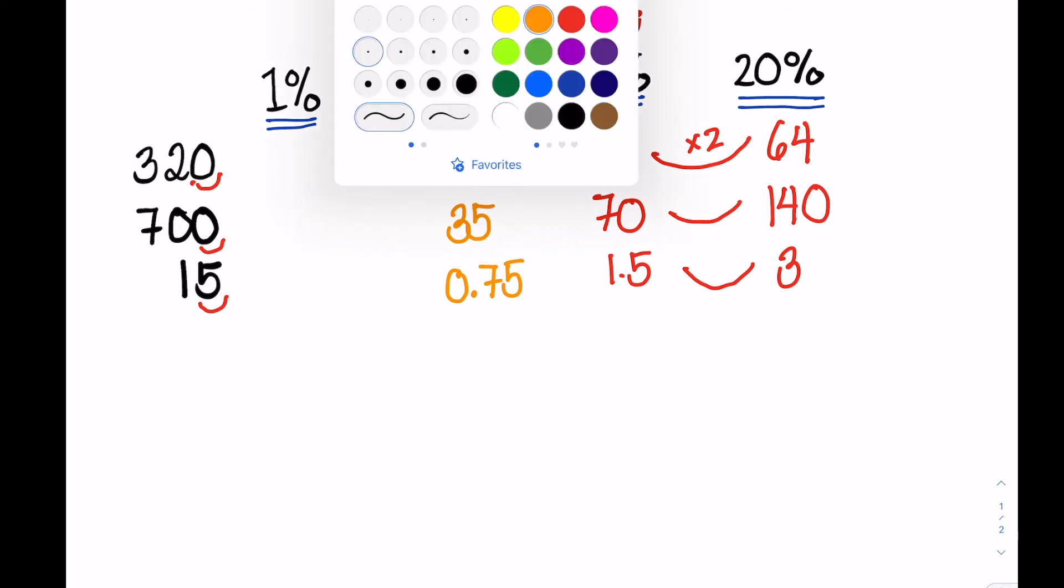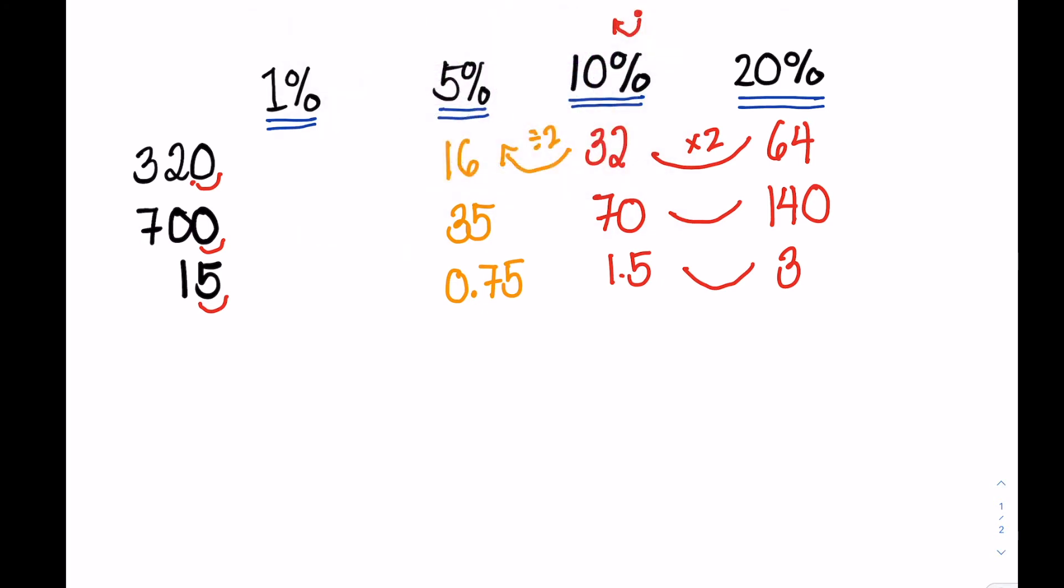Now to get the 1%, we move the decimal point twice. So for 320, the 1% is 3.2. For 700, the 1% is 7. And for 15, the 1% is 0.15.